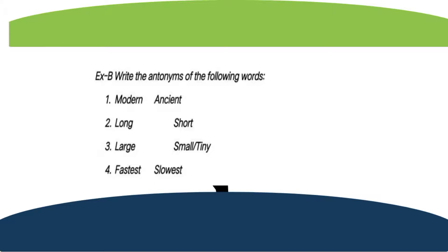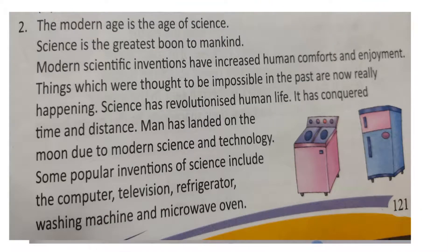Now let us try to solve the second passage. 'The modern age is the age of science. Science is the greatest boon to mankind. Modern scientific inventions have increased human comforts and enjoyment. Things which were thought to be impossible in the past are now really happening. Science has revolutionized human life. It has conquered time and distance. Man has landed on the moon due to modern science and technology. Some popular inventions of science include the computer, television, refrigerator, washing machine, and microwave oven.'